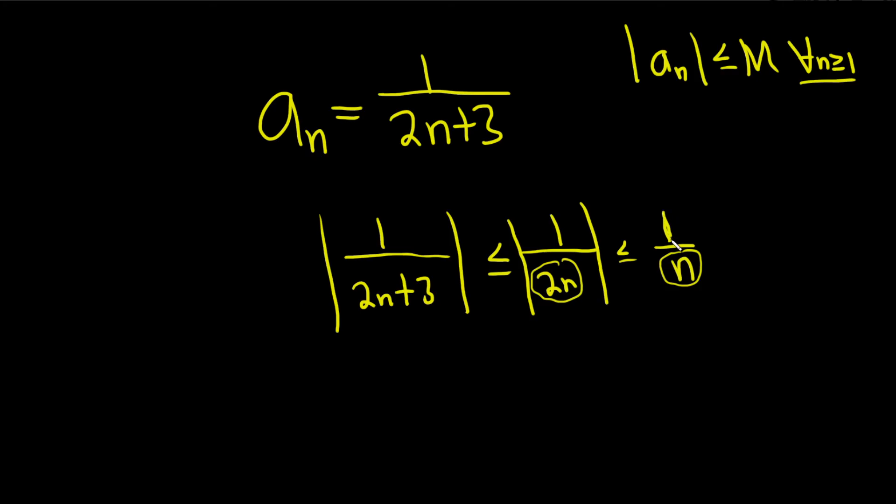And we want this to be less than or equal to a number. Well, n is greater than or equal to 1. So if you divide both sides by n, you get 1 greater than or equal to 1 over n. So 1 over n is less than or equal to 1. So this is less than or equal to 1. So the absolute value of a sub n is less than or equal to 1.